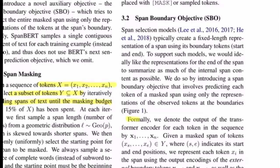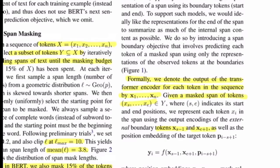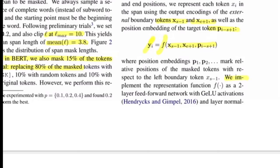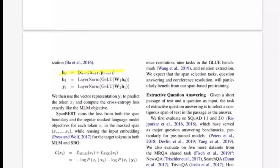For the span boundary objective, the output from the transformer encoder for each token is denoted by its vector representation. The masked sequence is defined with S as the starting position and E as the ending position. Tokens X(S-1) and X(E+1) are the boundary tokens encapsulating the span, and the positional encoding is included. A function F takes these three inputs and outputs the predicted label.